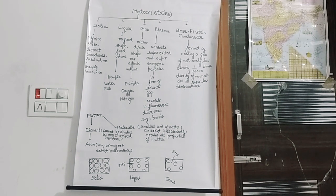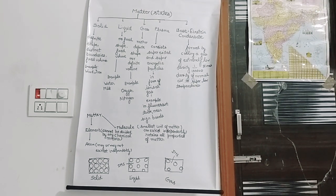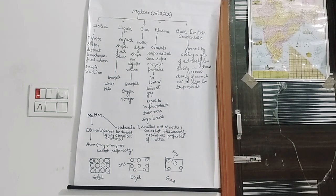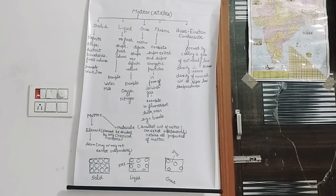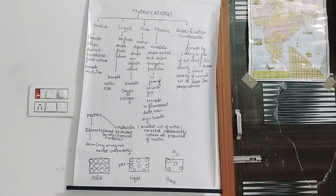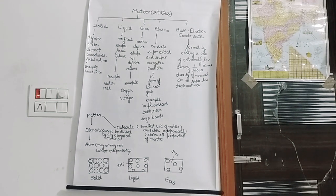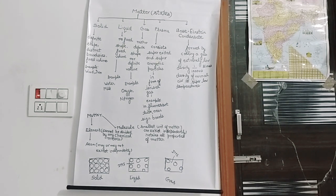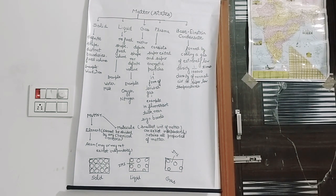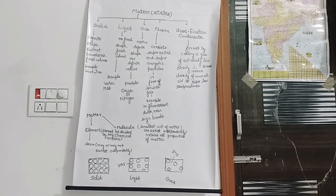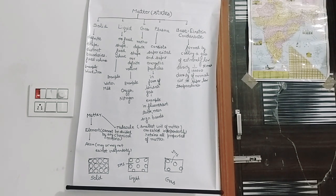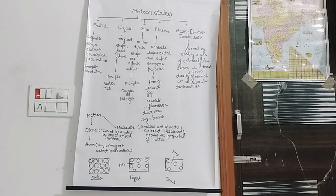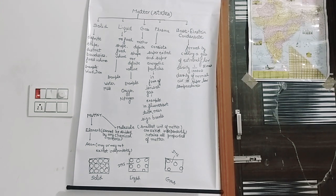Looking at the three diagrams: in solids, the packing is quite dense — particles are very close together and held by strong intermolecular forces of attraction. These particles cannot move anywhere; they can only vibrate about their mean positions. This explains why solids have a definite shape — the molecules are fixed at their positions.